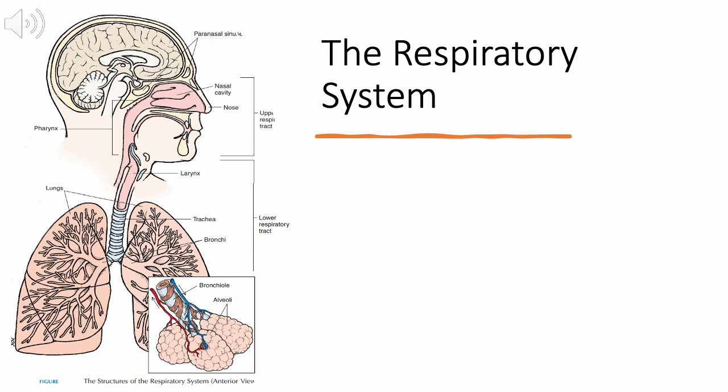The respiratory system is broken into two components. The upper respiratory tract is all anatomy from the nasal cavity down to the vocal cords. The lower respiratory tract is everything below the vocal cords to the alveoli.